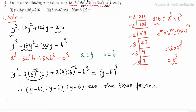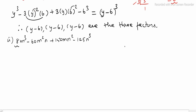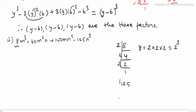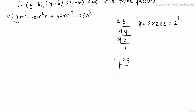Next, subdivision 2. The expression is 8m cube minus 60m squared n plus 150mn squared minus 125n cube. For 8: dividing by 2 gives 4, by 2 gives 2, by 2 gives 1, so 8 equals 2 cubed. For 125: 5 times 5 times 5 equals 5 cube.